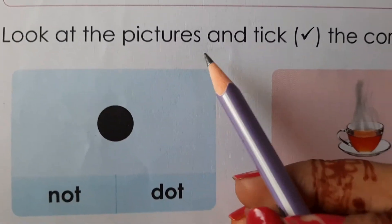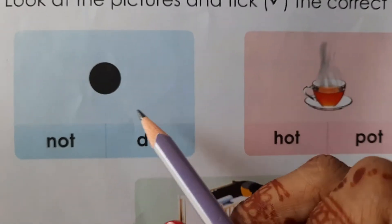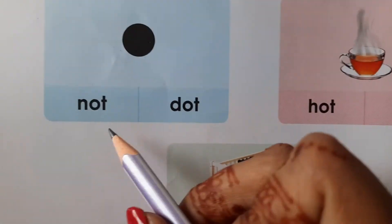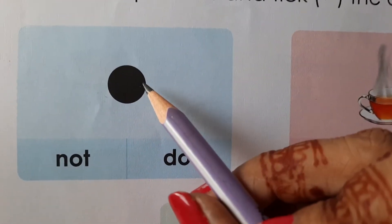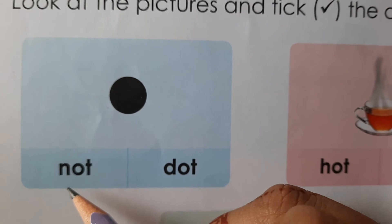Look at the pictures and tick the correct word. Now you have to first look at the picture and you have been given two words right below it. Look at the first one. What is this? Is it 'not' or 'dot'? It's a dot. D-o-t. Dot. So you will tick over here.